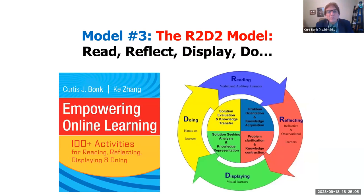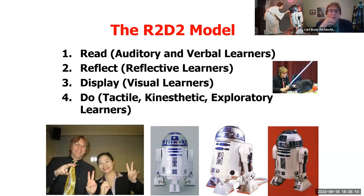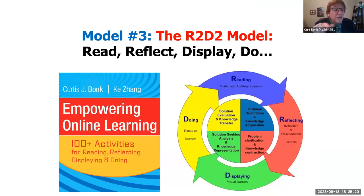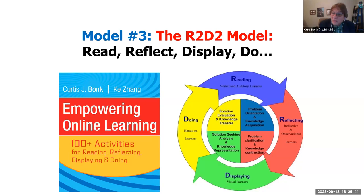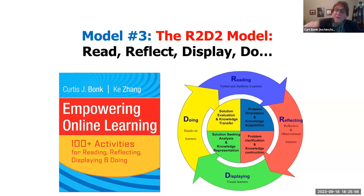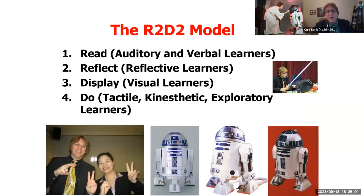The other model I mentioned was my R2D2 model — read, reflect, display, and do. This model is based on kind of Kolb's model of learning styles, but it's really not a learning style model — if you look carefully, this is a problem-solving wheel. Psychologists don't believe in learning styles because they don't hold water — like Myers-Briggs, they intuitively make a lot of sense but from a psychological standpoint the criteria don't hold up well for test-retest reliability and validity. This is about getting people to read, then reflect, then display their learning, then do something.